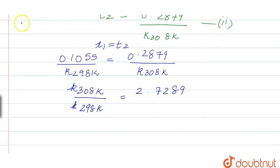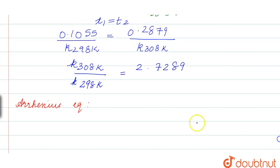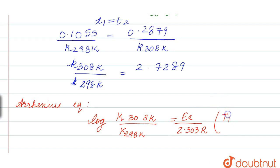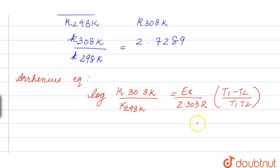Now let's go to the previous equation. Since we have two k values, we compare using: log of k at one temperature upon k at another temperature equals EA by 2.303 R into T1 minus T2 over T1 times T2. Now we substitute all given values.